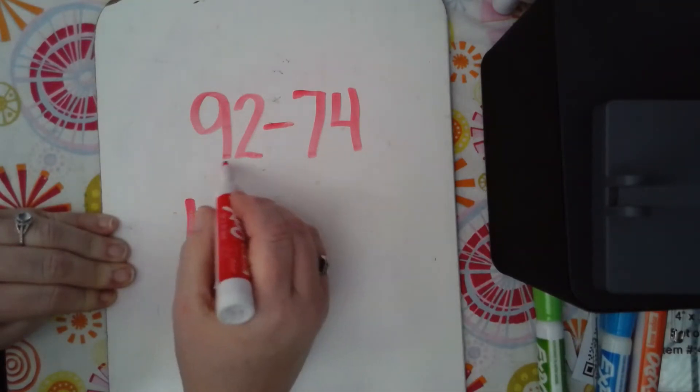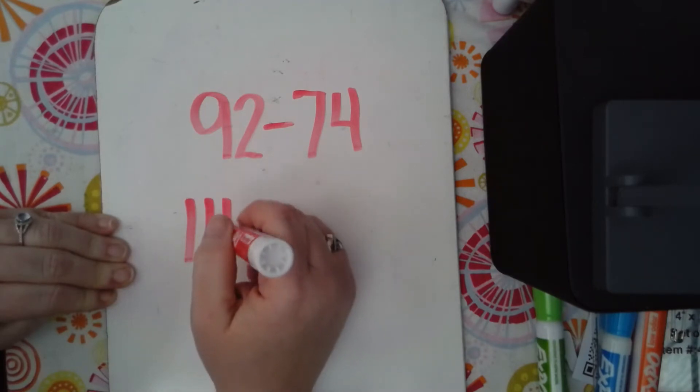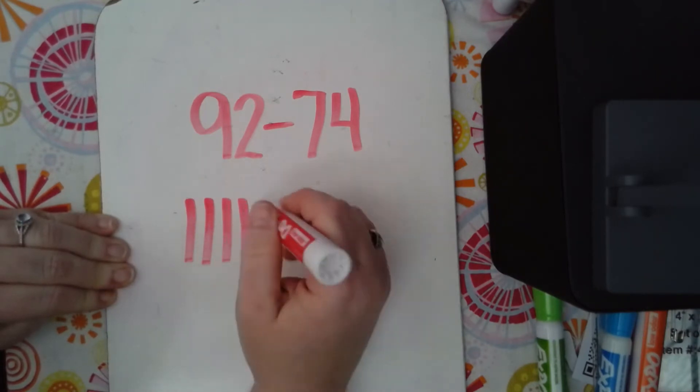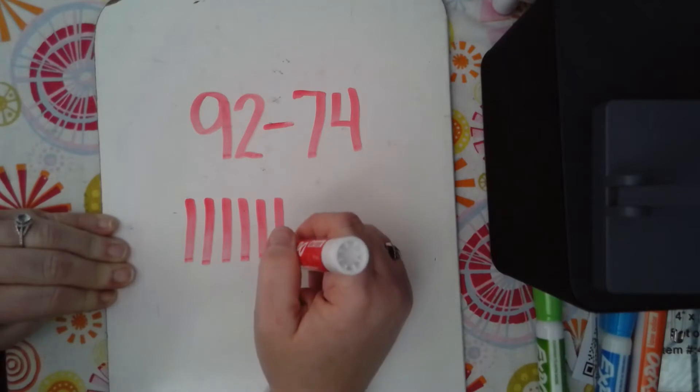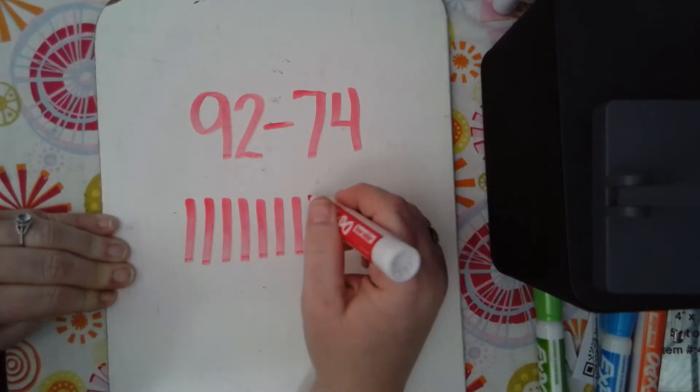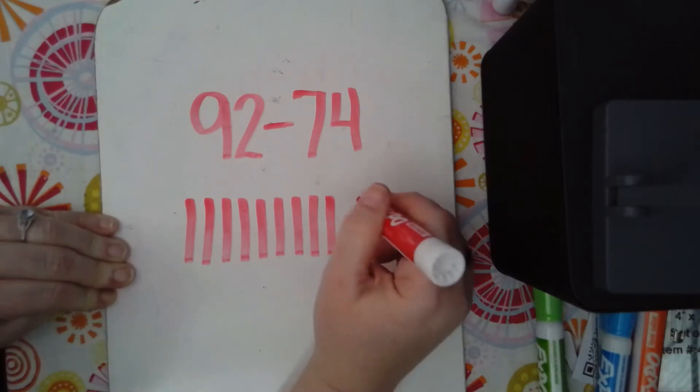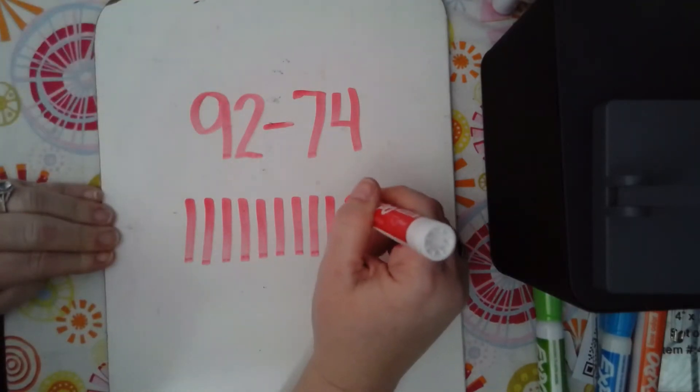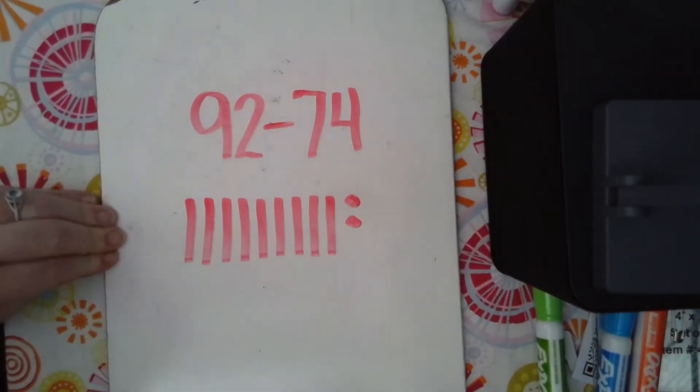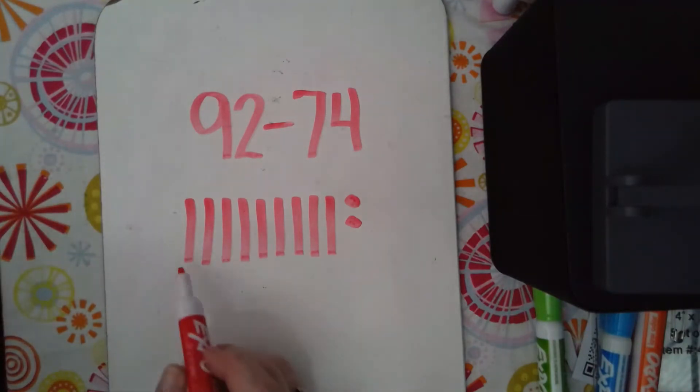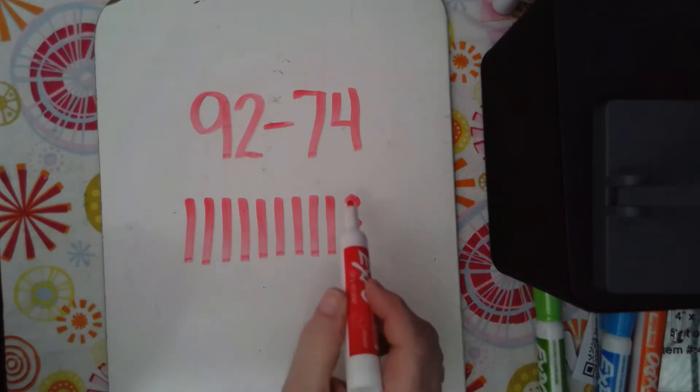So I need 9 tens. So 1, 2, 3, 4, 5, 6, 7, 8, 9, and then we want to do 2 ones. Alright, so that's 92. 10, 20, 30, 40, 50, 60, 70, 80, 90, 91, 92.